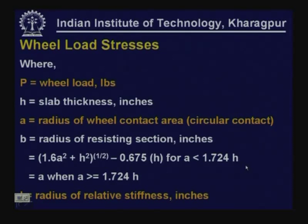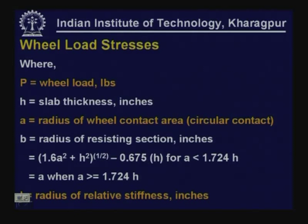If you know the wheel load and also the contact pressure, we can calculate the radius of load contact area assuming circular contact area. B is termed as radius of resisting section in inches, given as: √(1.6·A² + H²) minus 0.675·H for the condition where A is less than 1.724 times the thickness of slab. If A is greater than or equal to 1.724 times thickness of slab, then B is taken to be equal to A. L is the radius of relative stiffness in inches.